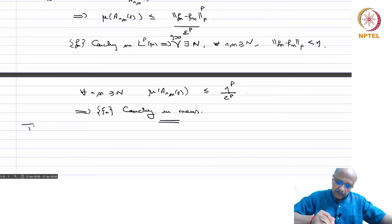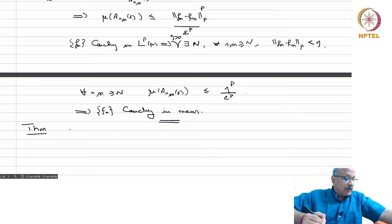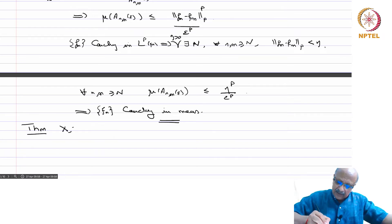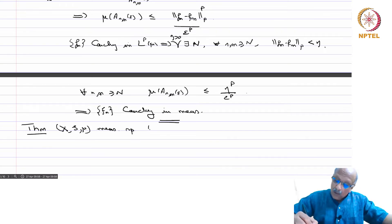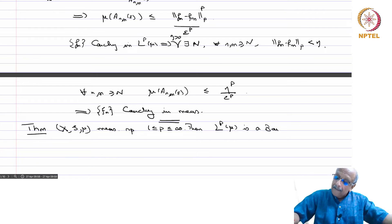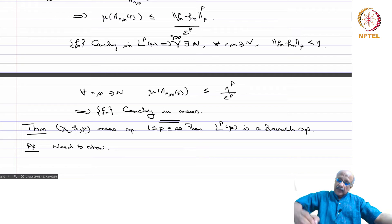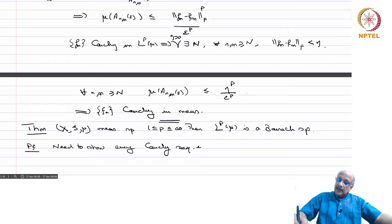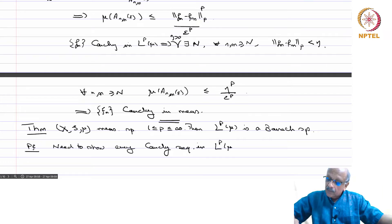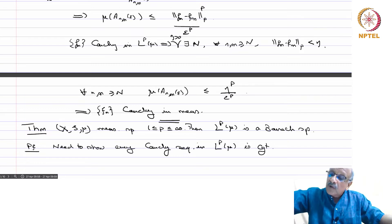Now we have the following important theorem, sometimes called the Riesz-Fischer theorem. LP(mu) is a Banach space. A Banach space is a complete normed linear space, and therefore we need to show that every Cauchy sequence in LP(mu) is convergent.